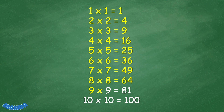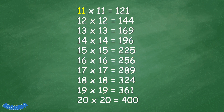9 times 9 equals 81. 10 times 10 equals 100. 11 times 11 equals 121. 12 times 12 equals 144.